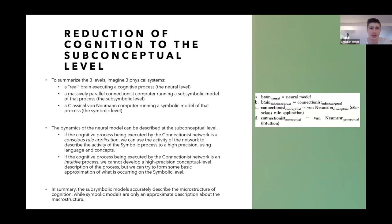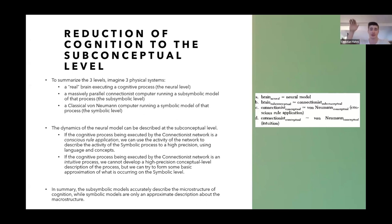To summarize three levels: imagine a brain at the neural level executing a cognitive process; a massively parallel connectionist computer running a sub-symbolic model at the sub-symbolic level; and a classical von Neumann computer running a symbolic model at the symbolic level. The sub-symbolic process can execute one of two processes — it can either substitute a conscious rule application or it can execute the intuitive process.